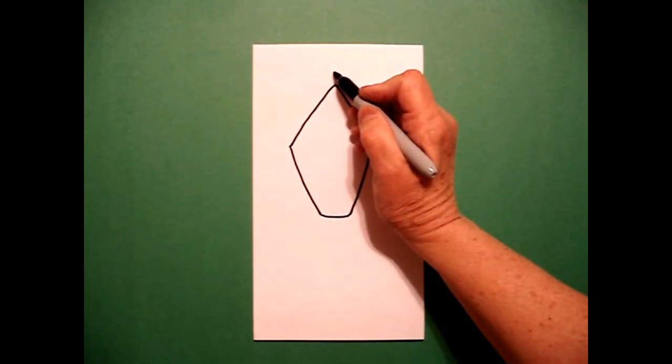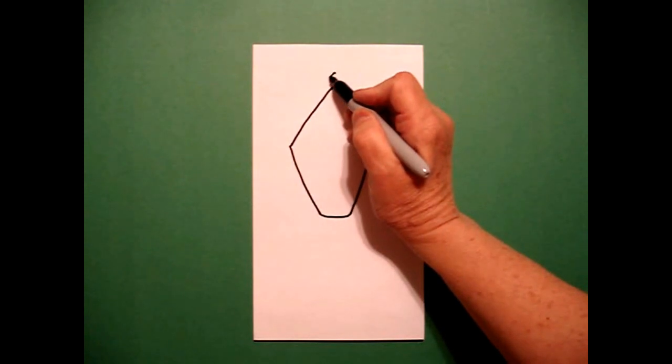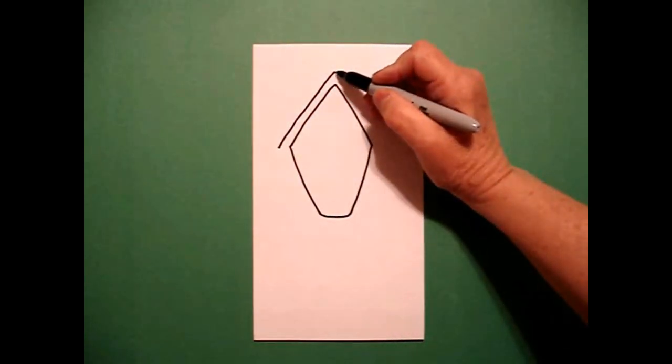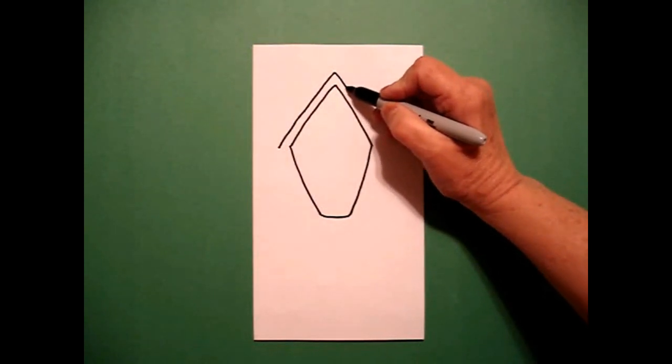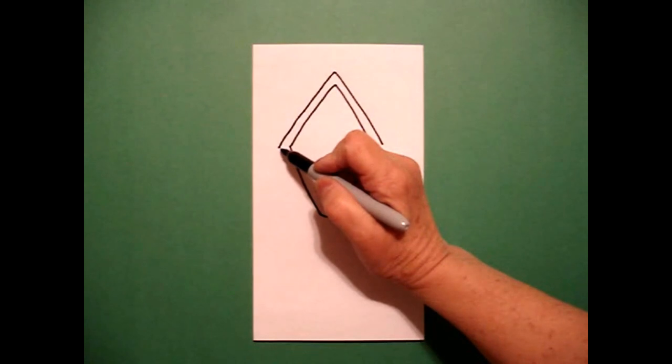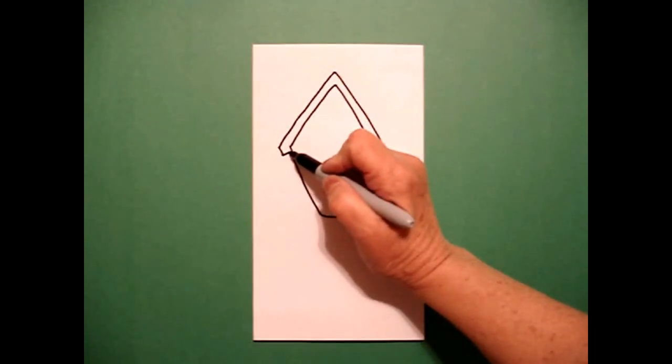And from that dot, I'm going to mimic my line again. So I draw a straight diagonal down on the left, come back to the dot, straight diagonal down on the right. At the bottom, I'm going to put a little straight line down, straight line up, connect.